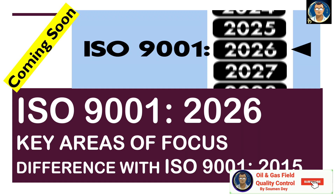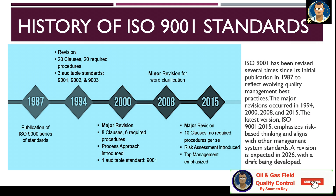Before going to the 2026 details, let us take the development of ISO 9001 standards with this simple flow chart. 1987 is the year of publication of ISO 9000 series and standards. If you see the graph here, every almost 8 years a new ISO 9001 standard came. But this year is an exception — it is almost 11 years to publish another edition.